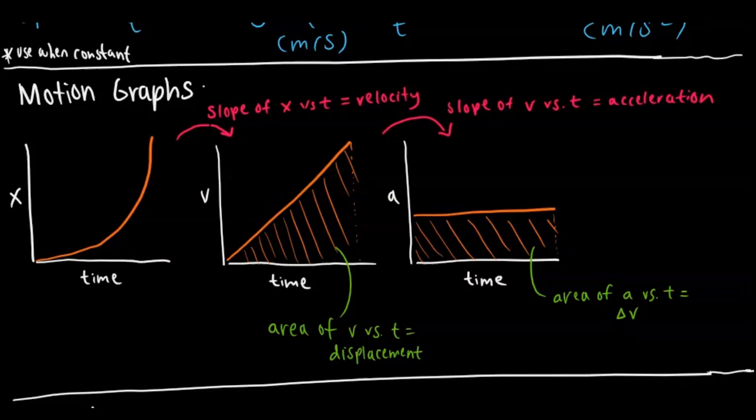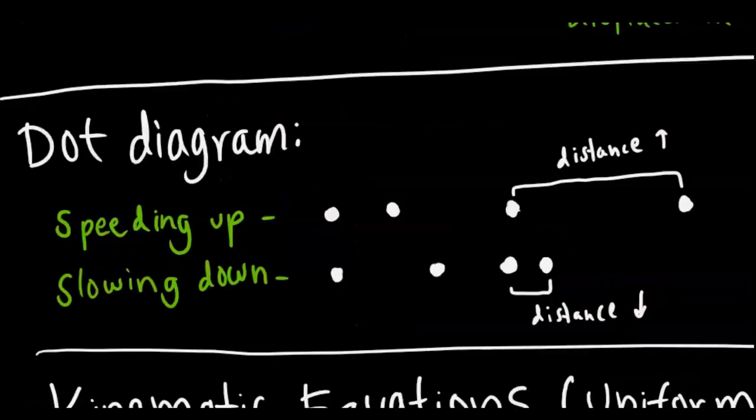You want to work backwards from that, which is analyzing the area under the curve. The area under the curve for acceleration would be change in velocity, and the area of velocity over time would represent your displacement.